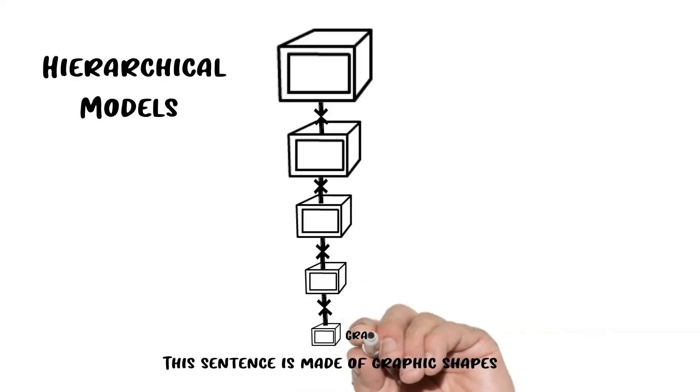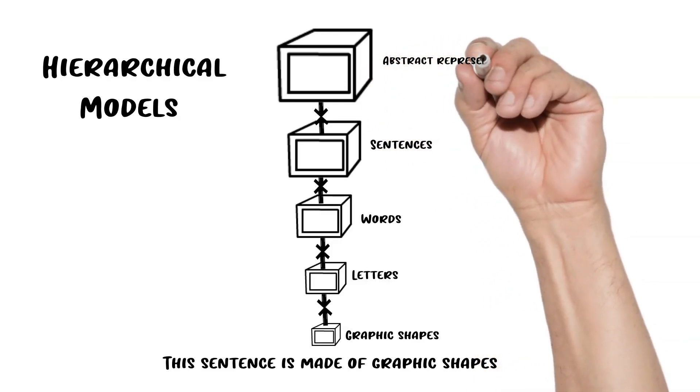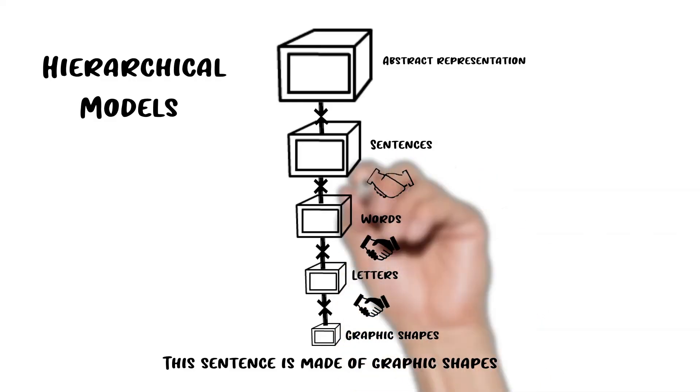Your brain takes these shapes and makes letters, then takes these letters and makes words, then takes these words and makes sentences, and then takes these sentences and is able to apply abstract ideas to understand these sentences. These handshakes occur at every single level.